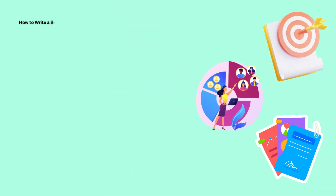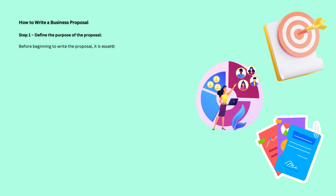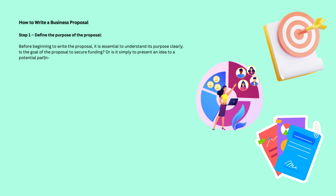How to Write a Business Proposal. Step 1: Define the Purpose of the Proposal. Before beginning to write the proposal, it is essential to understand its purpose clearly. Is the goal of the proposal to secure funding? Or is it simply to present an idea to a potential partner? Knowing the proposal's purpose will help determine its structure, direction, and content.